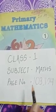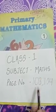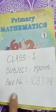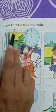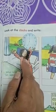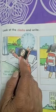Good morning students. Take out your math book, page 103-104. Look at the clocks and write. Clocks are given here. You will look at the clock and then you will tell and write the time.